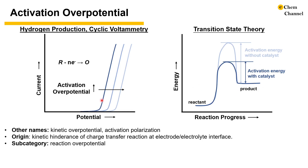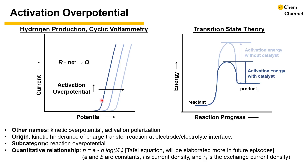Activation overpotential also includes a subcategory of reaction overpotential, where a slow chemical reaction is coupled to a fast charge transfer step. For example, hydrogen production in weak acids is hindered by the dissociation of the acids. Quantitatively, in some electrochemically irreversible or quasi-reversible cases, activation overpotential may be described by the Tafel equation. In a future episode, we will elaborate on this equation and the Butler-Volmer equation. Activation overpotential plays an important role in the research of electrocatalysis, fuel cells, and others.